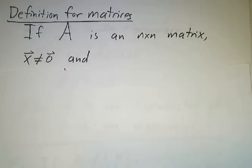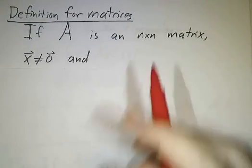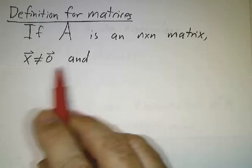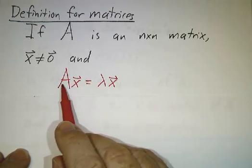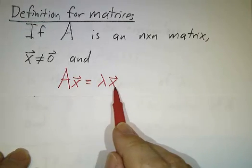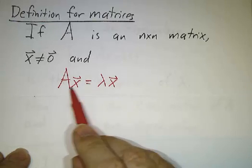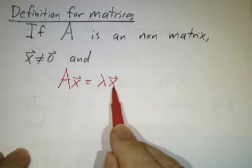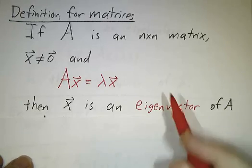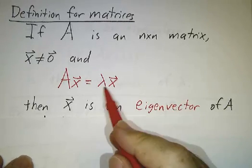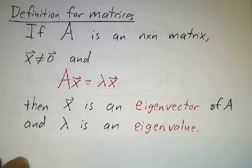There's one definition for matrices and another for linear operators, so let's do matrices first. Suppose we have a square n by n matrix and a nonzero vector. If it happens that the matrix times the vector is a multiple of the vector — that is, the matrix times the vector is pointing in the same direction — then we call the vector an eigenvector, and we call the scalar multiple an eigenvalue.